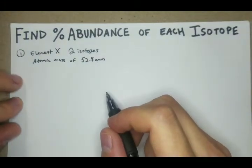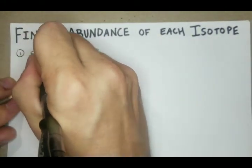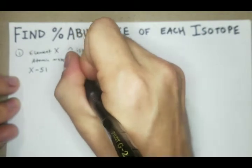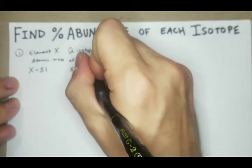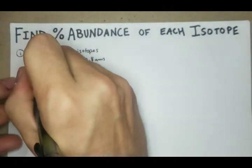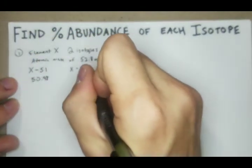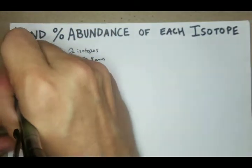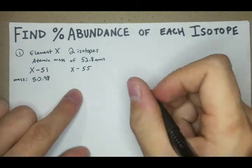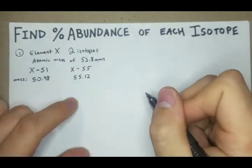We'll say there's two isotopes. One is X-51 and the other is X-55. X-51 has a mass of 50.98 AMUs, and X-55 has a mass of 55.12 AMUs.